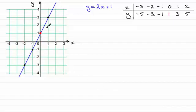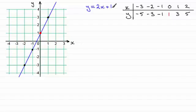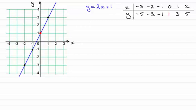I could have taken other points — any point on the line would satisfy this equation. For instance, if I said x was a half, 2 times a half would give me 1, and 1 plus 1 would be 2. So when x is a half, y turns out to be 2. And you can see that would be the case looking at the graph — when x is a half, the corresponding y point would be 2. So although I've just done a selection of points, any point on this line would satisfy this equation.